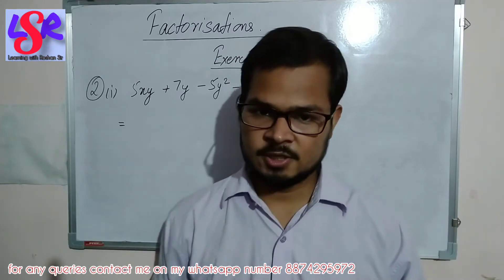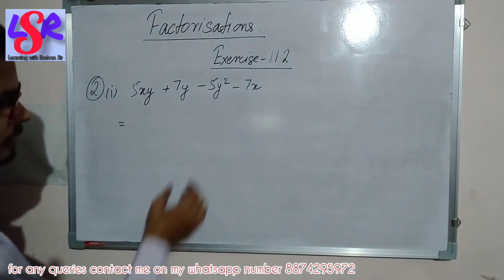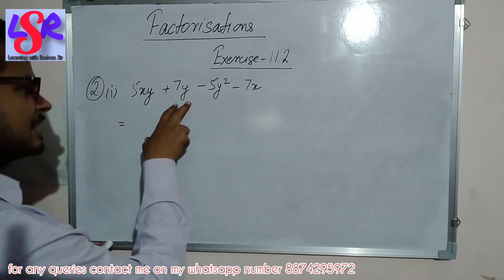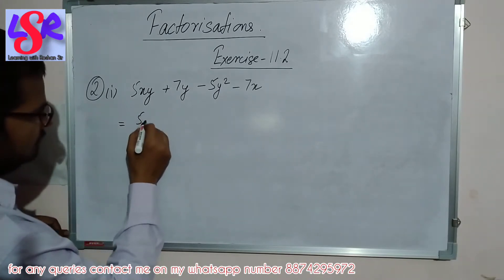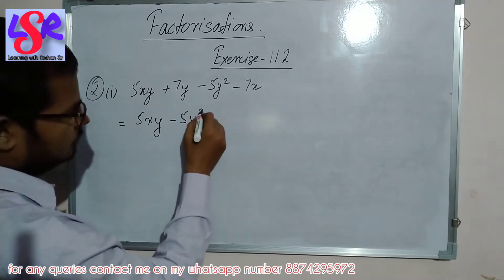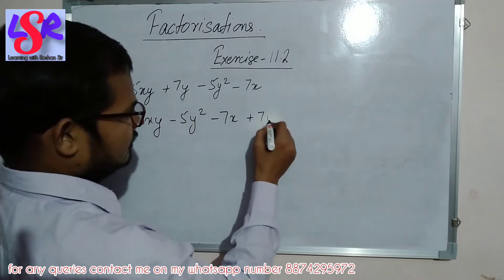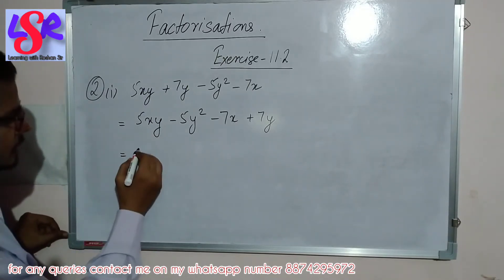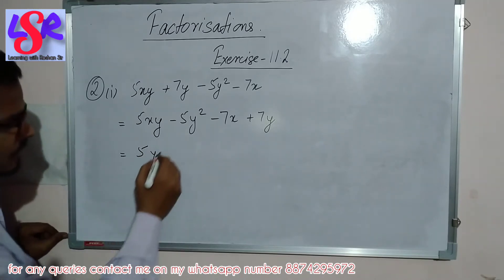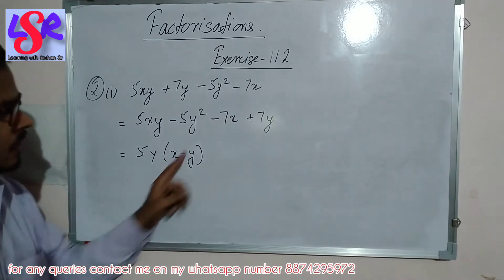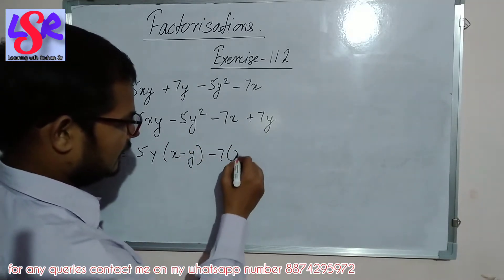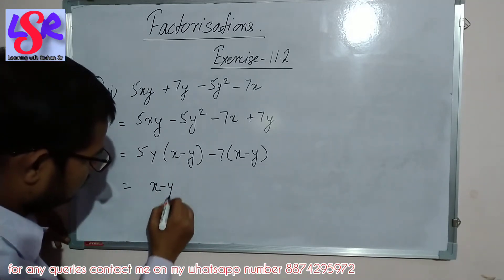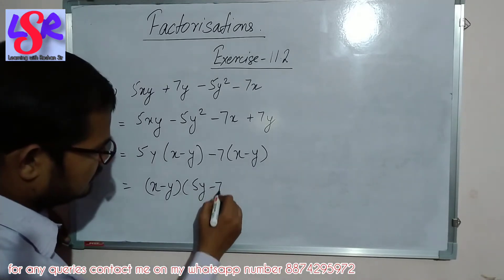Now we move to question number 2, first part. Here we are having 5xy plus 7y minus 5y squared minus 7x. First we rearrange: 5xy minus 5y squared minus 7x plus 7y. Then we take 5y as common from the first two, leaving x minus y. From the last two we take minus 7 as common, leaving x minus y. The bracket is common in both, so the answer is (x minus y)(5y minus 7).